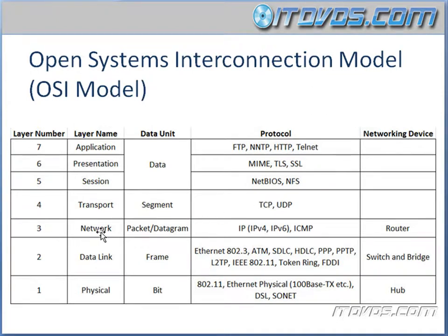The next layer is layer 3, our network layer. At this point our segments are encapsulated and they become packets or datagrams. This layer is responsible for logical addressing — so in an IP network, it would be an IP address. This is also what layer routers function on. Layer 3 is where routers function because routers route packets based on their IP address.